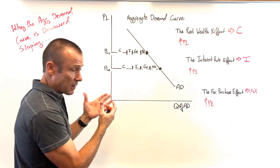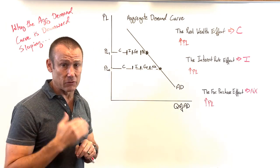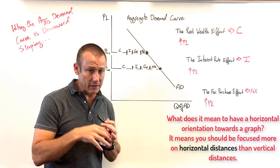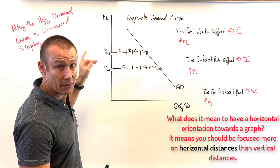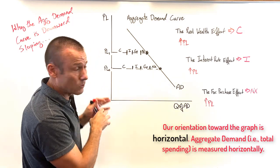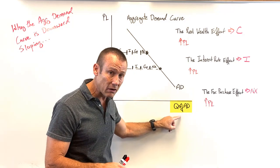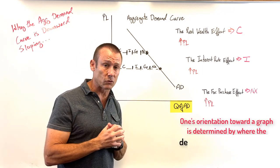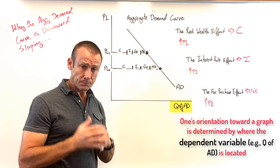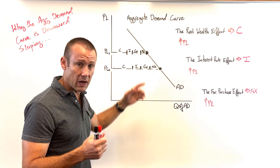Now here's the graph, and one important thing to note is that my orientation toward this graph is horizontal. In a math class our orientation is vertical because on the vertical axis we put the dependent variable. Here the price level is the independent variable, and the dependent variable determines our orientation to the graph — so my orientation to this graph is horizontal.